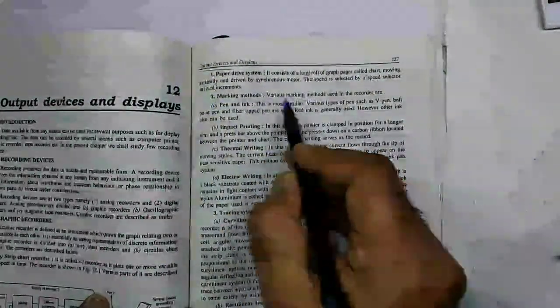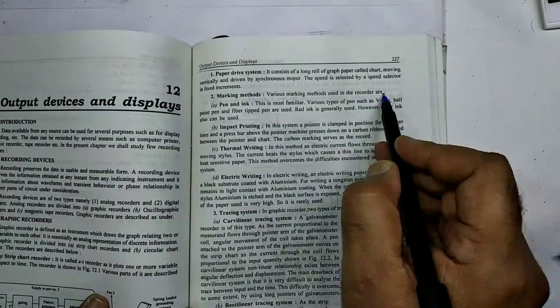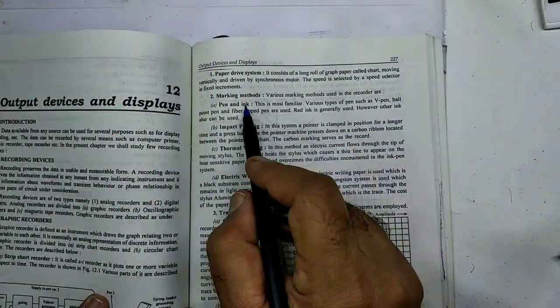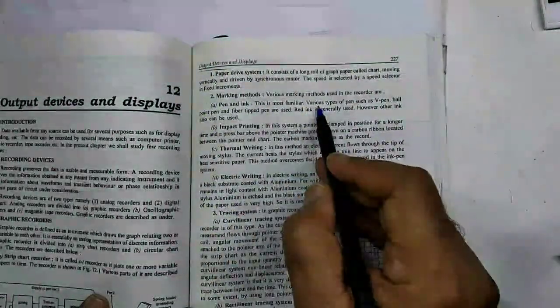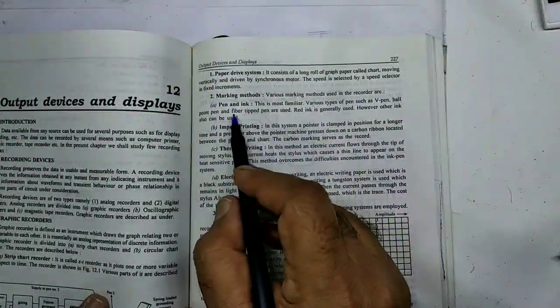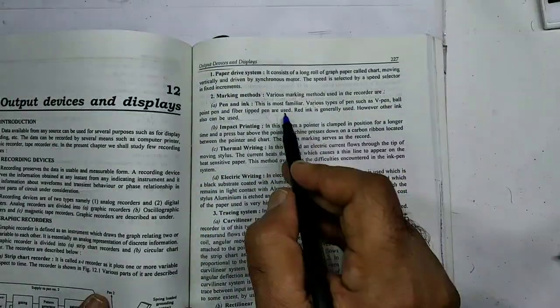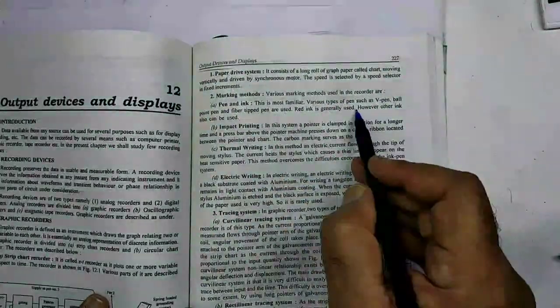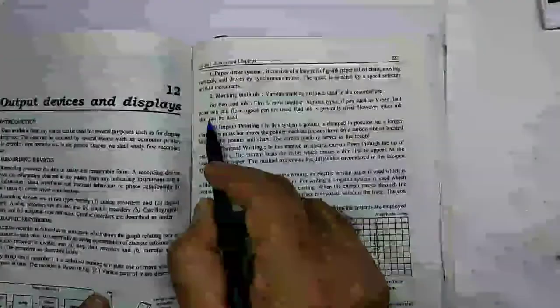Second is marking method. Various marking methods used in recorder are first pen and ink. This is the most familiar method. Various types of pen such as V pen, ballpoint pen, fiber tipped pen are used. Red ink is generally used, however other ink can also be used.